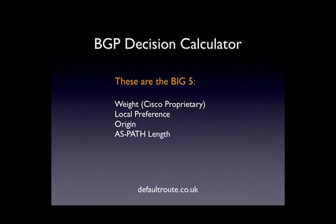Next we've got AS path length. As you're probably already aware, your registrar gives you an autonomous system number. When traffic leaves your AS into somebody else's, that route is prepended with your AS number. So if your AS is 65001, when your route leaves to another router, it's prepended with 65001. The next router, maybe 65002, sends it on with the path 65002, 65001. The next one, 65003, makes it 65003, 65002, 65001. The shorter the path, the better the weighting and the more keenly BGP will use that route.